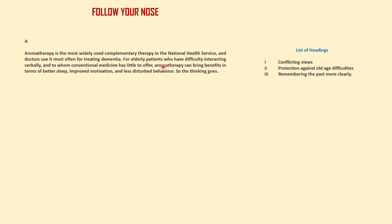This is paragraph A. I want you to pause the video right now, read this paragraph, and find the heading from the list of options. So, which option did you select? It must be 'protection against old age difficulties,' right? Because you read the first and second sentences and quickly jumped to that option — and I must say you are correct. But the problem is, this is not the entire paragraph.